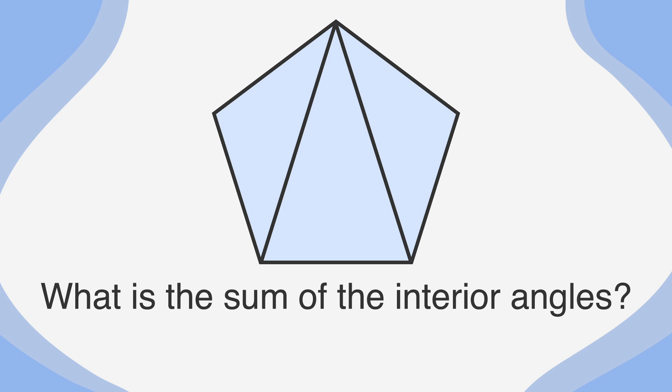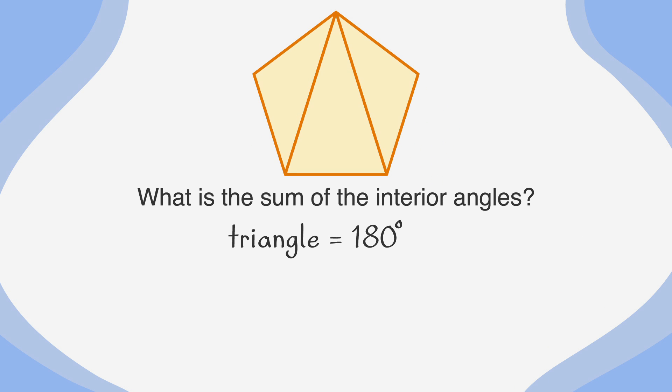Then, draw a line from that vertex to the other corners. You'll notice that you've made three triangles which share vertices with the pentagon. To find out how many degrees are in the interior angles of the pentagon, you can use your knowledge that each triangle has 180 degrees.